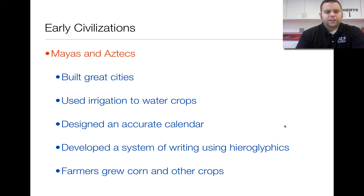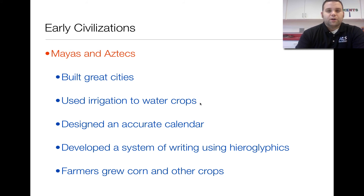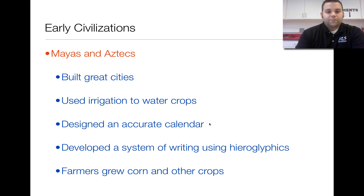Some things the Mayas and Aztecs had in common: they both built great cities — Tenochtitlan, for example, had close to a million people living in or near it around 1325. They were able to create an irrigation system to water their crops, so engineering was quite advanced for this time. They were also able to design an accurate calendar based on the movement of the stars — in fact, the Mayan calendar predicts that the earth is going to change in December.